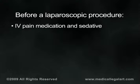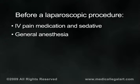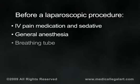Laparoscopic cholecystectomy is done under general anesthesia, which will put you to sleep for the duration of the operation. This will relax the muscles of the abdominal wall, allowing your surgeon room to work. A breathing tube will be temporarily inserted through your mouth and into your throat to help you breathe during the operation.